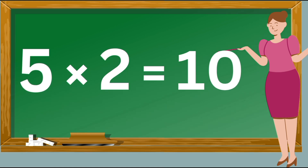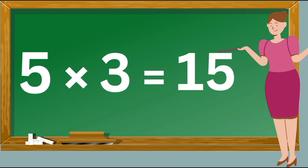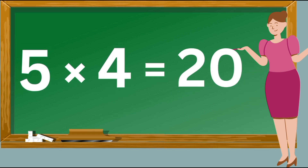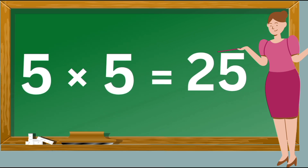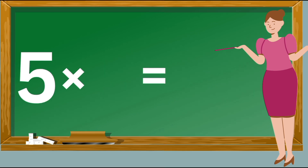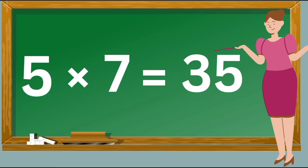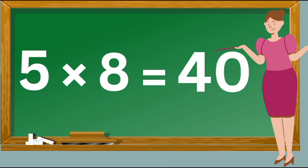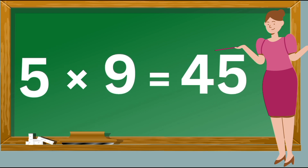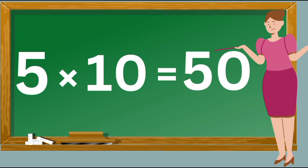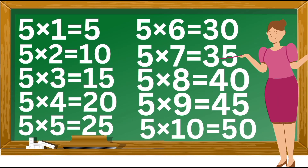Five twos are ten. Five threes are fifteen. Five fours are twenty. Five fives are twenty-five. Five sixes are thirty. Five sevens are thirty-five. Five eights are forty. Five nines are forty-five. Five tens are fifty. Five fives are twenty-five. Five sixes are thirty. Five sevens are thirty-five. Five eights are forty. Five nines are forty-five. Five tens are fifty.